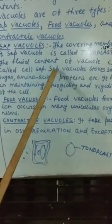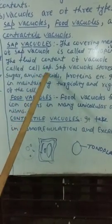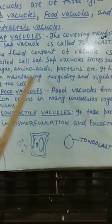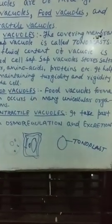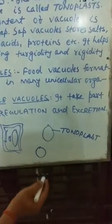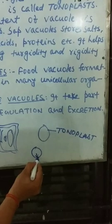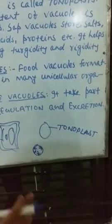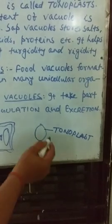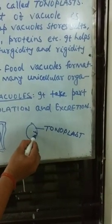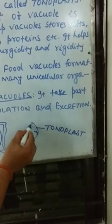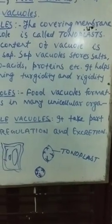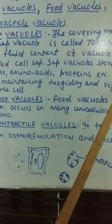The fluid content of the vacuole is called cell sap. Sap vacuoles store salt, sugar, amino acids, protein, etc. It helps in maintaining turgidity and rigidity of the cell. Just like a bladder filled with air — the air pressure acts on the wall and it swells — similarly, the sap exerts pressure on the tonoplast, causing a turgid or swollen condition.